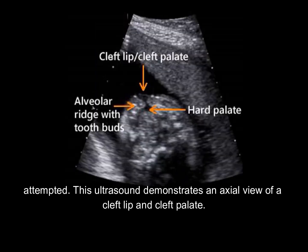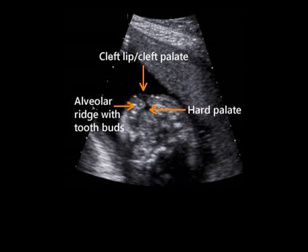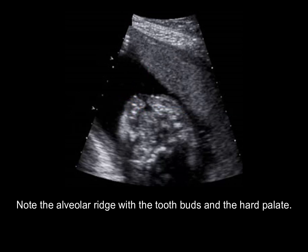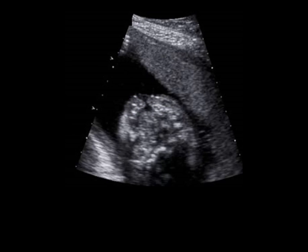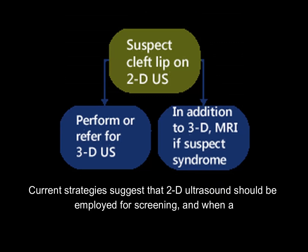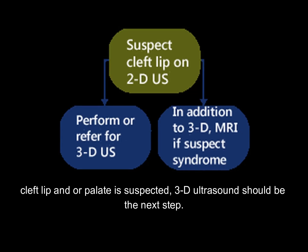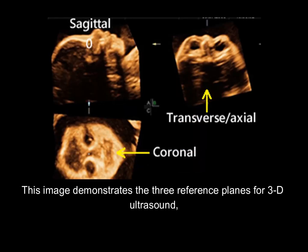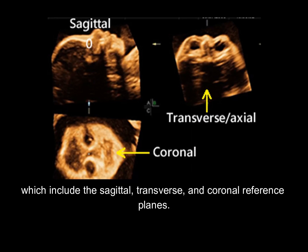This ultrasound demonstrates an axial view of a cleft lip and cleft palate. Note the alveolar ridge with the tooth buds and the hard palate. Current strategies suggest that 2D ultrasound should be employed for screening, and when a cleft lip and/or palate is suspected, 3D ultrasound should be the next step. This image demonstrates the three reference planes for 3D ultrasound, which include the sagittal, transverse, and coronal reference planes.